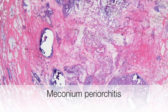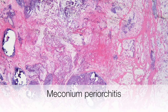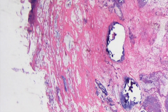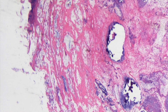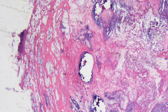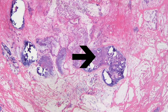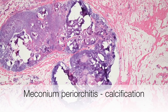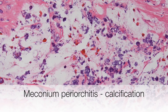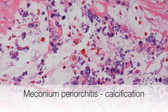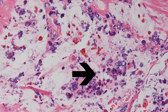This is a low power view of meconium periorchitis. There are three features to recognise. At this power you can see the pink areas — that is the foci of fibrosis. The whitish areas are the pools of mucus or myxoid material from the meconium. And the purple areas are the foci of calcification. On higher power, this area shows the foci of microcalcification — these are the small purple nodules.